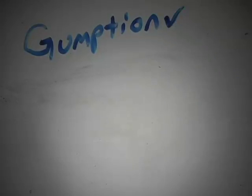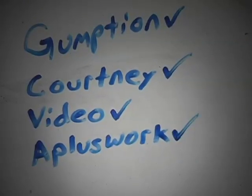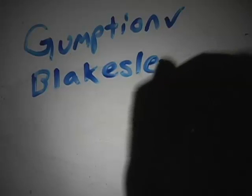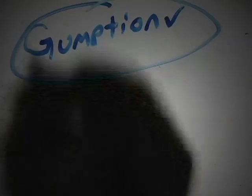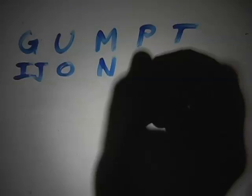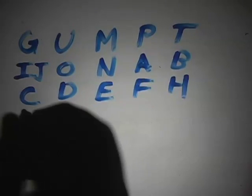Example password: gumption. Other good examples include Courtney, video, and A-plus work. Bad examples include Blakeslee and Clapp. We'll stick with gumption. That password then turns into a passcode by filling in a 5x5 grid. I and J occupy a single slot. The rest of the alphabet fills in the remainder of the grid — no letter occurs twice.